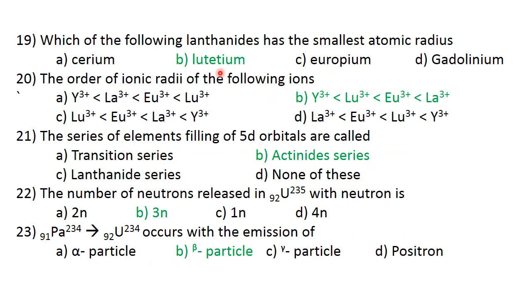Question number 19: Which of the following lanthanides has the smallest atomic radius? The smallest atomic radius is lutetium. Answer B is the correct answer. The order of ionic radii of the following ions: Y3+ less than Lu3+ less than Eu3+ less than La3+. This is the correct answer.